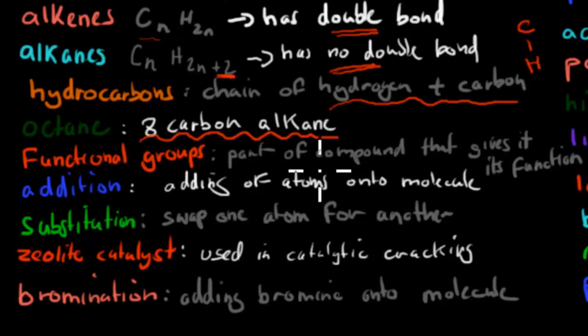Functional groups are the part of the compound that gives its function. For example, ethanol has an OH group, and that makes a difference from ethane. It's that part that makes it different from other ones. That's its functional group.